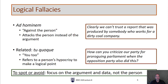Let's start with the ad hominem. This is an attack against the person — instead of attacking a person's argument, you attack that person's character or something else about them to downplay their overall argument. An example would be: 'Clearly we can't trust a report produced by somebody who works for a dirty coal company.' This might be something somebody would say about an environmental impact assessment — arguing the person was biased so we can't trust the report.